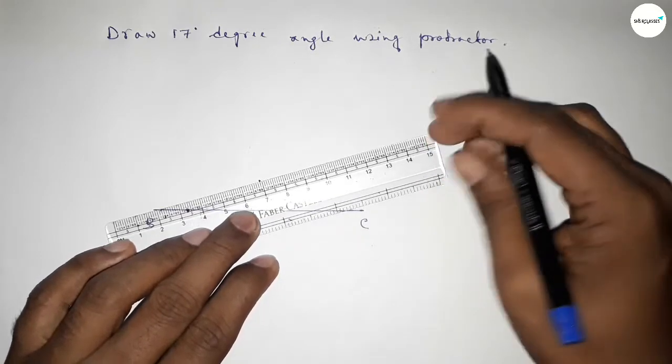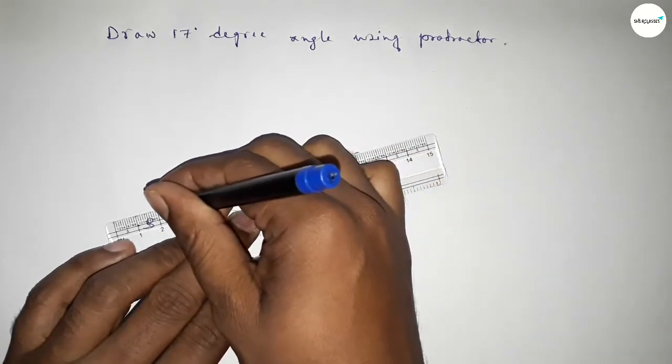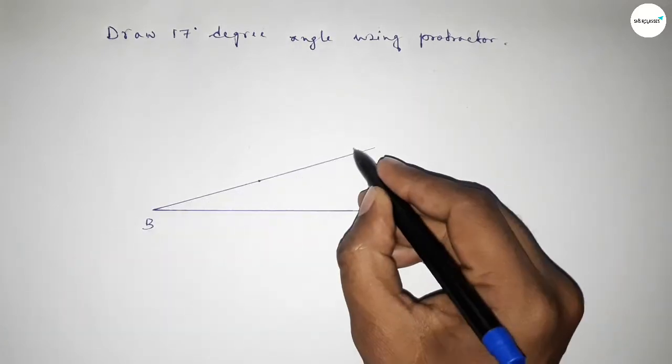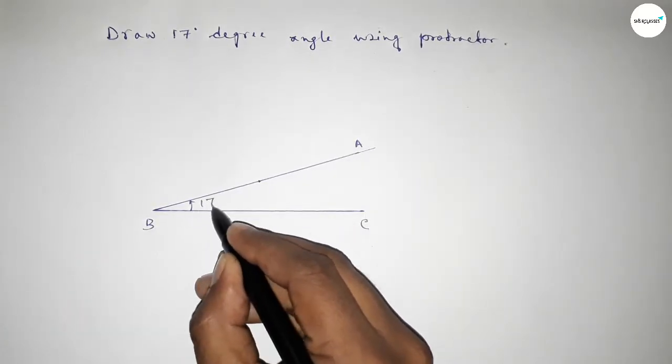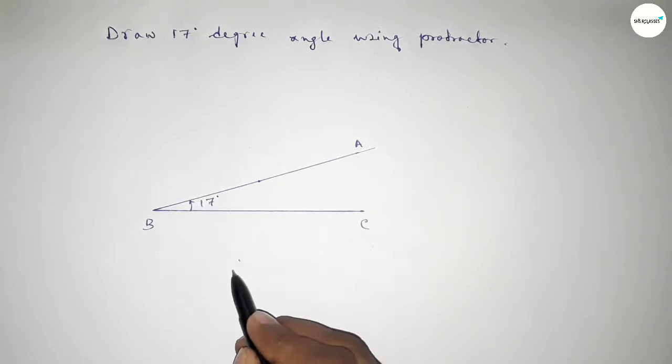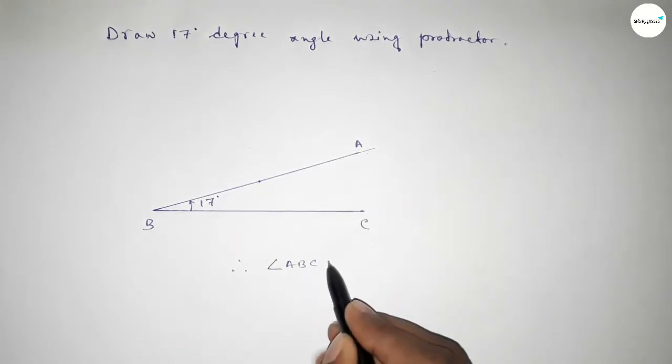Joining this side and taking here point A. So angle ABC - this is 17 degree angle. Therefore, angle ABC equal to 17 degrees.